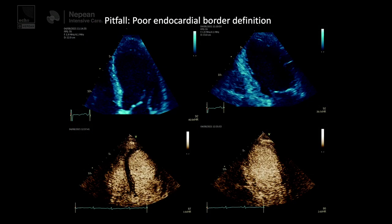Most ICUs don't have access to contrast, but it might be something we get access to in the future — we've actually got some contrast scan images. A poor man's contrast is to play around with the B-color mode mapping, because sometimes changing it to gold, orange — there's a chroma orange one on Philips — or sepia can help make that endocardial border definition clearer.